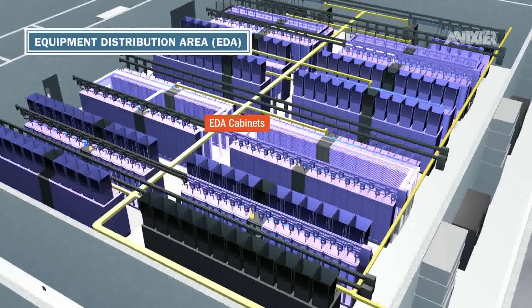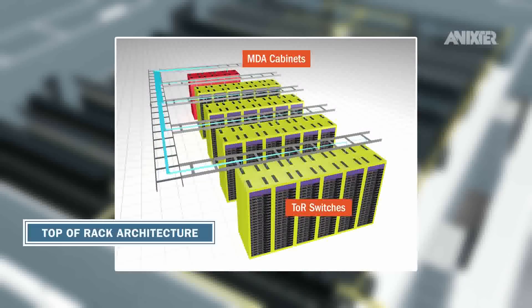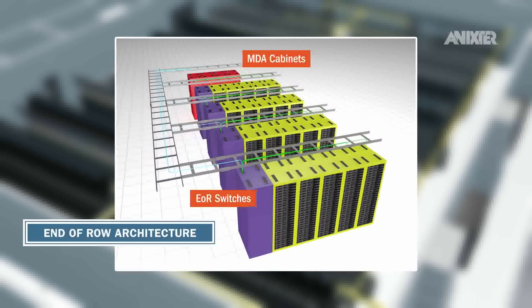In general, top of rack architectures are better suited for data centre environments requiring low latency and high performance server connections, where end of row and middle of row architectures look to optimise cost and flexibility.